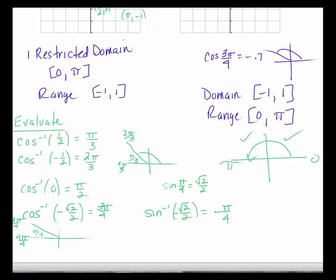To summarize: for inverse sine, if the input is positive your answer is a positive acute angle; if the input is negative your answer is a negative acute angle. But for inverse cosine, your answers are always positive — either first-quadrant angles or second-quadrant angles.